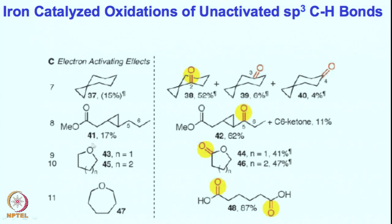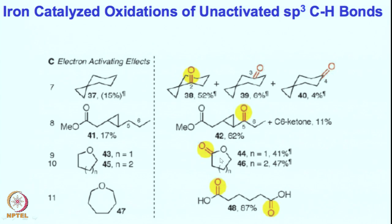If you are looking at cyclopentane, cyclohexane, THF-type or pyran-type rings, you will see that the alpha position — the lone pair on the oxygen atom — can activate this position. This C-H bond activation becomes much easier due to the presence of this lone pair, which can donate into the anti-bonding orbital of the C-H bond, making it far more reactive compared to all other carbon-hydrogen bonds in this cyclic molecule.